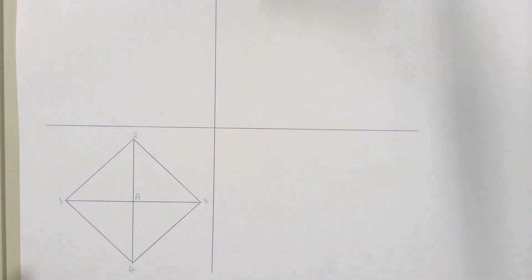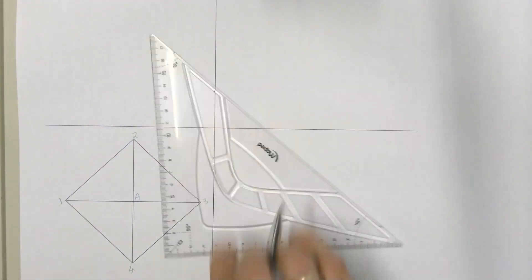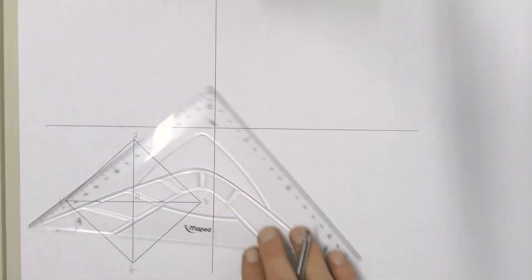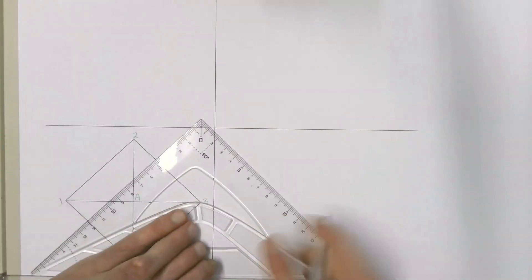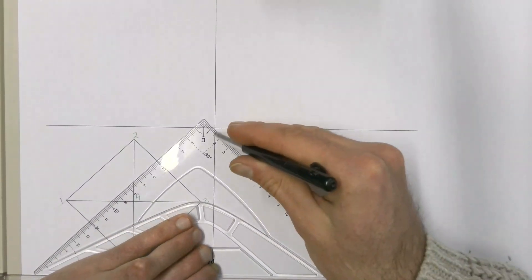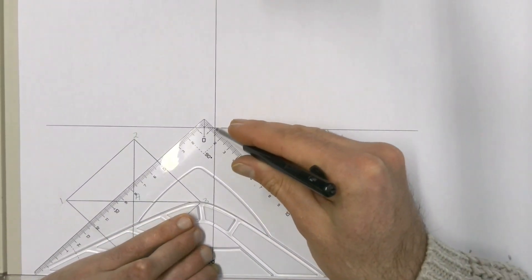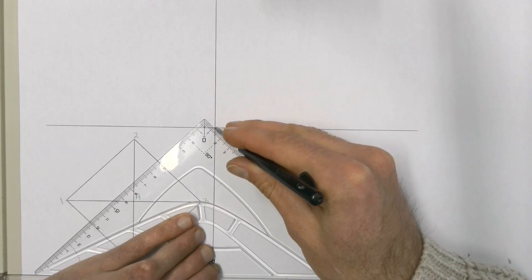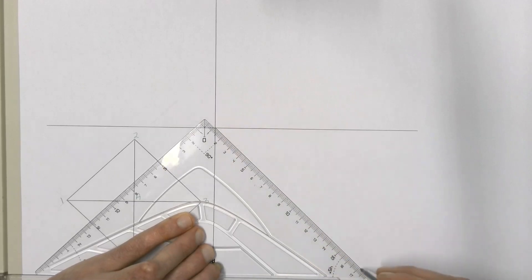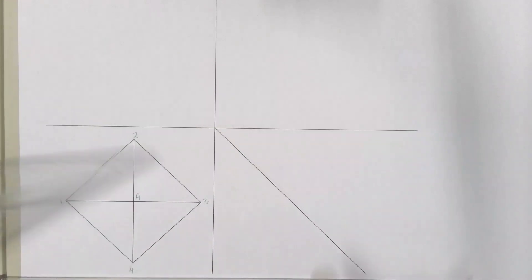We're also going to draw in our 45-degree line, which we'll use our 45-degree set square for. It comes down at the bottom on the right-hand side, and we're going to use that later to find our left view.